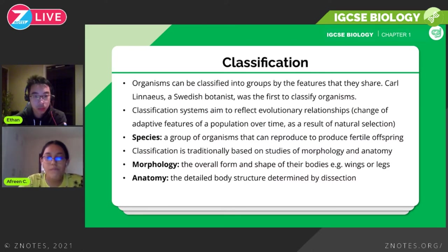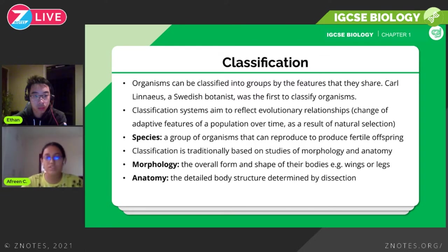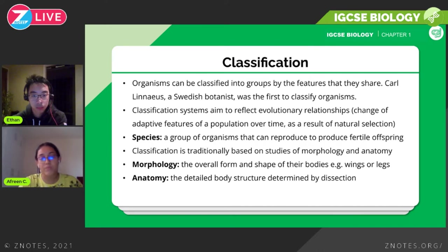Organisms can be classified into groups by the features they share. A Swedish botanist called Carl Linnaeus was the first person to classify organisms. Classification systems usually reflect how organisms have evolved over time and what environmental changes caused changes in the organism. A common example is the gray moth and the black moth during the industrial revolution — gray moths were more common before because they camouflaged onto trees, but after the industrial revolution black moths became more prevalent because tree barks got darker, making the lighter gray moths easier for predators to spot.